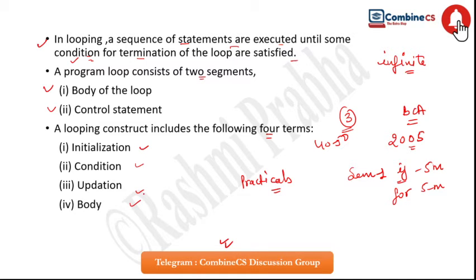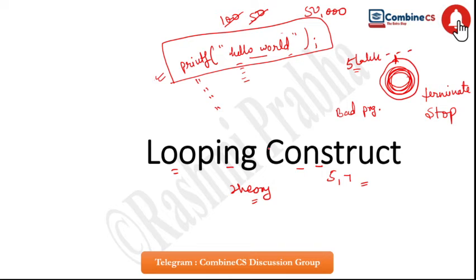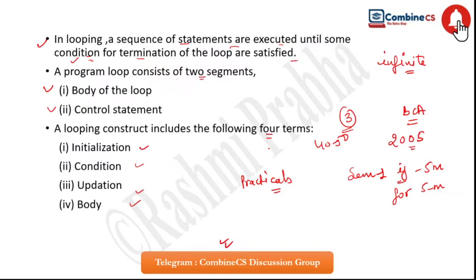The four terms are: initialization, condition, updation, and body. Understand these concepts, and you also have 3 types of loops: for, while, and do-while.